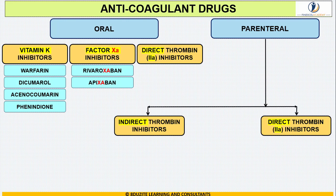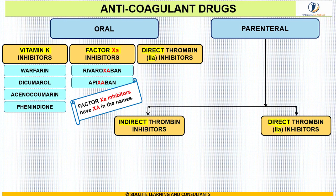Another way to remember rivaroxaban specifically is to look at the letters: 'rivar' reflects reversible, 'o' reflects oral, 'xa' reflects Factor 10a, and 'ban' reflects antagonize or inhibitor. So rivaroxaban is a reversible oral Factor 10a inhibitor.